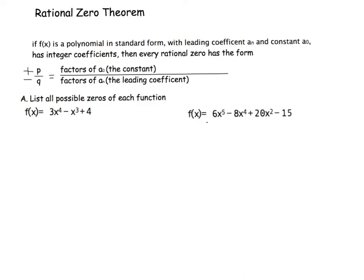We're going to look at extending what we've been learning over the last couple of days, and we're going to talk about the rational zero theorem. On Friday, we looked at if we know one of the zeros, we can use synthetic substitution to find the rest of them by dividing and then factoring.